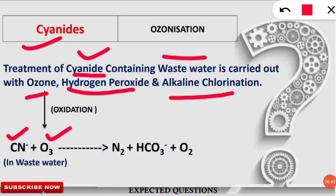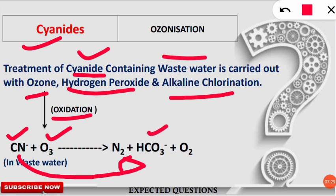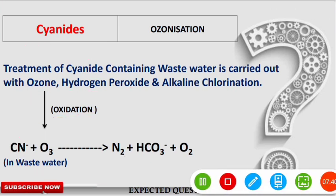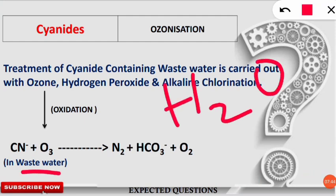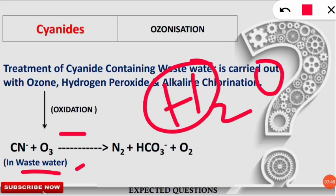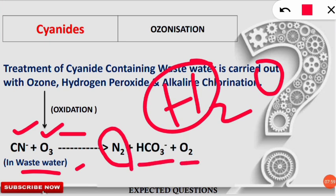When the ozone molecule attacks, an oxidation reaction takes place. Ozone is a very good oxidant. CN⁻ (cyanide) loses its electron and is converted to N₂ (nitrogen gas), while carbon is emitted as carbonate ions or carbon dioxide. The H in the reaction comes from water (H₂O) present in the wastewater. This is not a fully balanced equation, but essentially CN⁻ attacked by ozone is oxidized, forming nitrogen gas, carbonate ions, and oxygen, which are subsequently treated further to yield purified water.